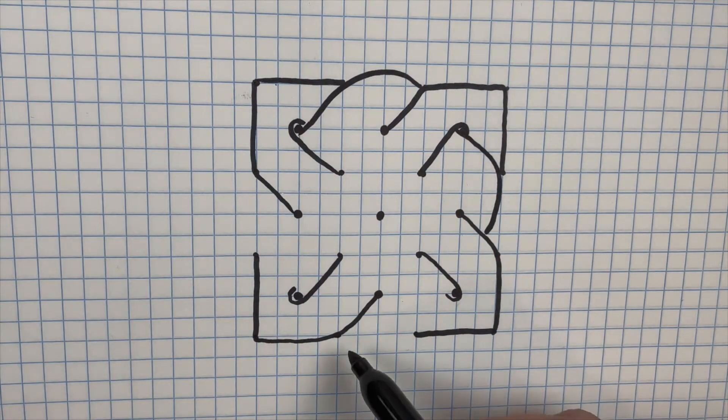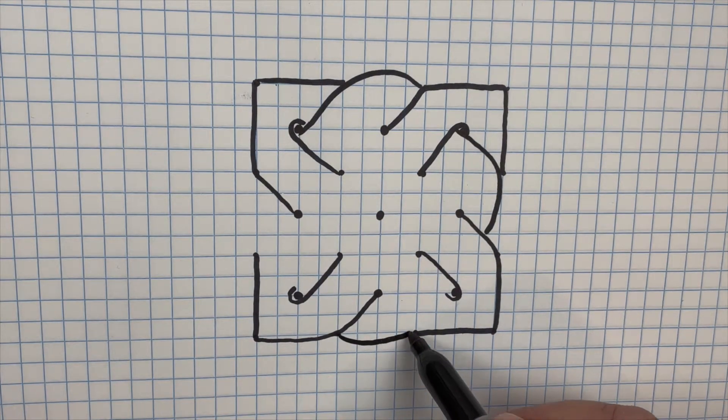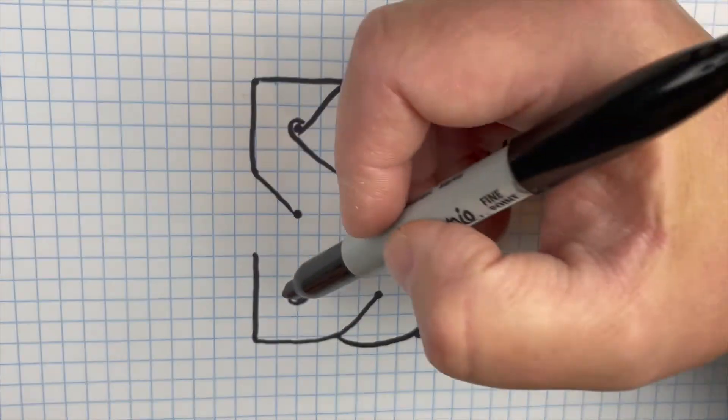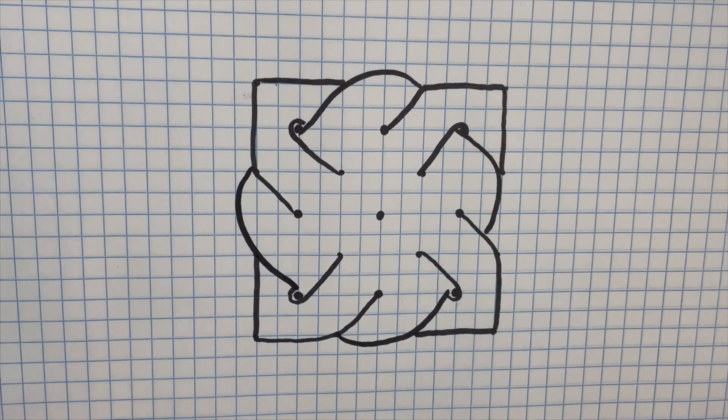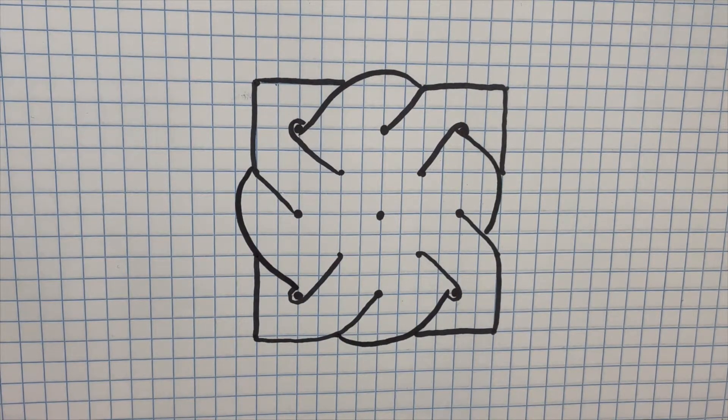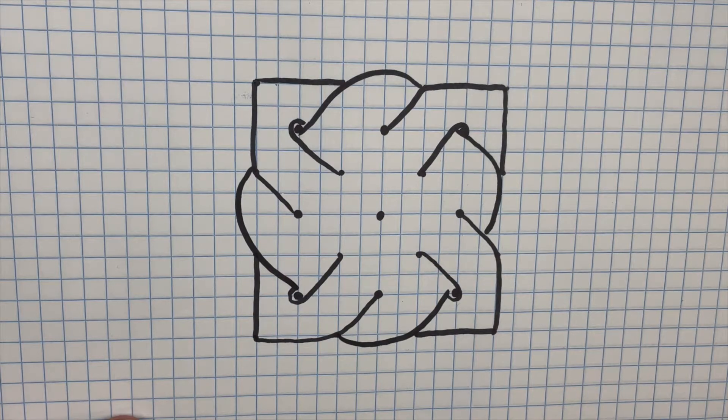Once again, you're gonna go underneath and circle. And for the fourth time, under your hook and circle. So if you look at it, it almost looks like you did your first pattern and then you've almost got like a kind of a semi-circle underneath it.